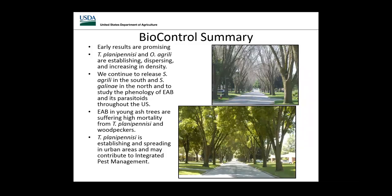In summary for biocontrol: early results are very promising. Tetrasticus and Oobius are doing a good job becoming established and dispersing. We'll continue releasing Spathius agrili in the south where we know they can survive, and Spathius galinae from Russia mainly in the north. EAB in young ash trees is suffering high mortality from Tetrasticus and woodpeckers working together. Tetrasticus is also doing a terrific job establishing and spreading in urban areas, which may work well in concert with integrated pest management.